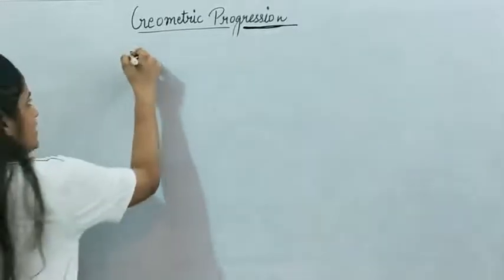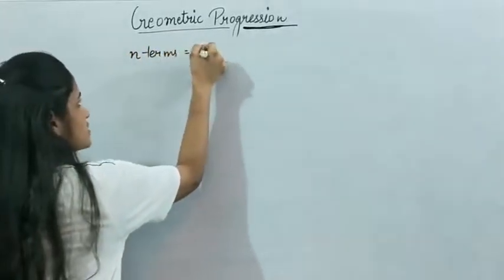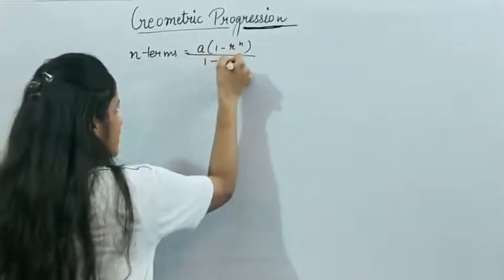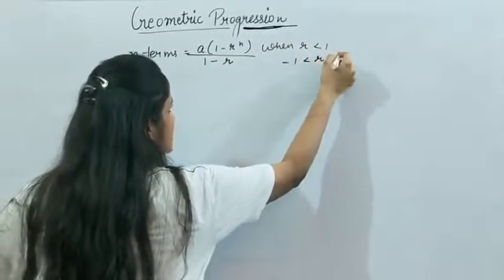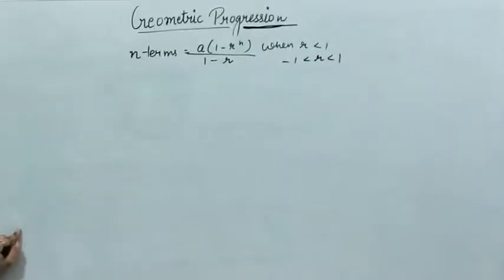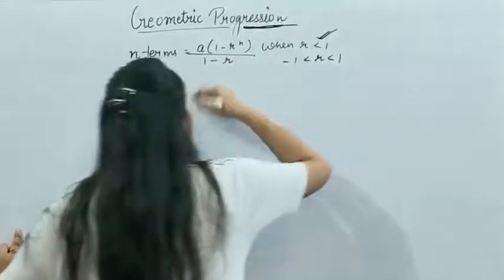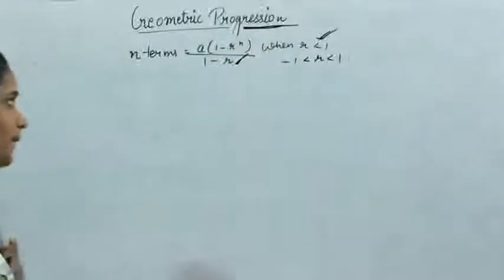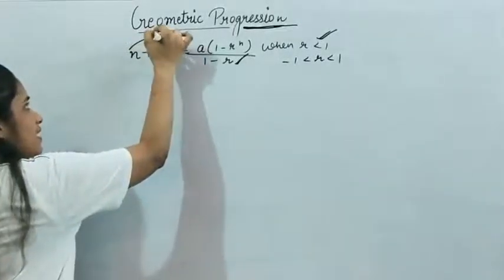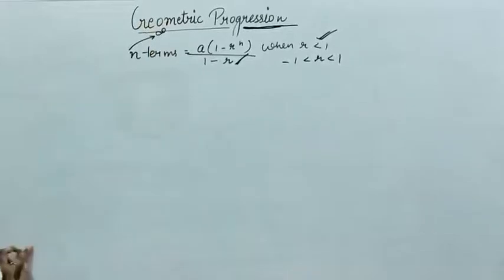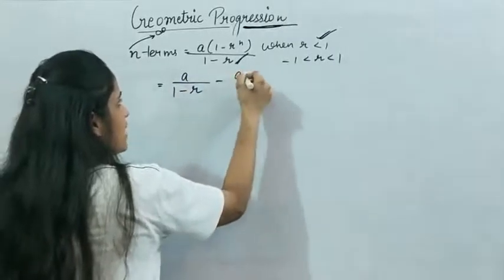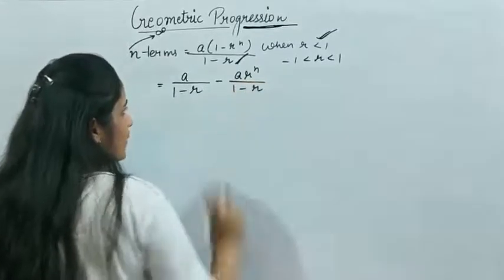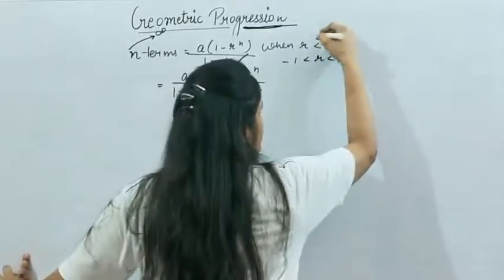Now, how to find the sum of infinite terms. The sum of n terms is S_n = a(1 - r^n) / (1 - r), when -1 < r < 1. This can be written as a/(1 - r) minus a·r^n/(1 - r).